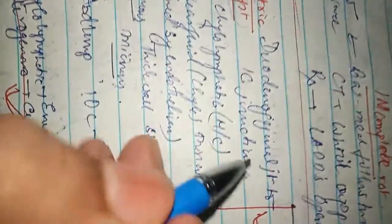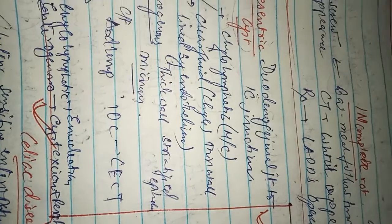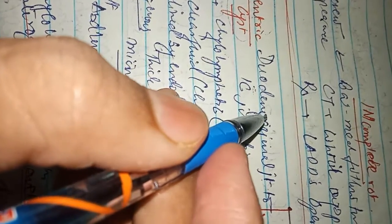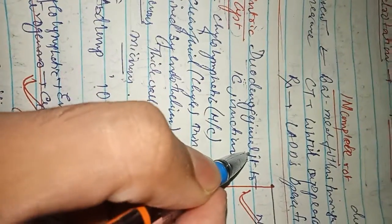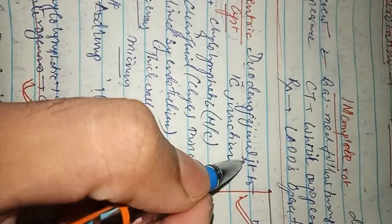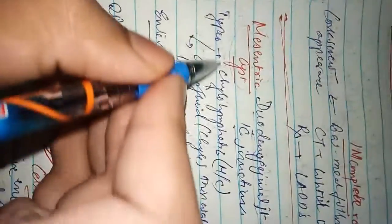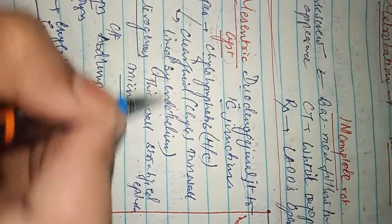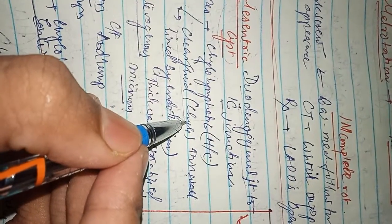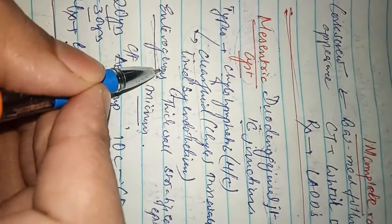Coming to the second topic which is the mesenteric cyst. Mesenteric cyst is basically a cystic swelling seen at the root where the mesentery arises, from the duodenojejunal junction to the ileocecal junction. There are two types: the chylolymphatic type, which is most common, has a thin wall lined by endothelium and contains a clear fluid that is chyle. The other is the enterogenous type.